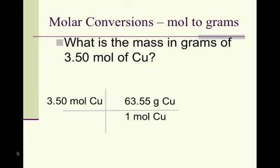The molar mass of copper is 63.55 grams per mole. Since we have moles in the top box, it has to go in the bottom of the next box, so it'll cancel. And we're left with grams of copper. If you multiply the top boxes and divide the bottom boxes using the proper number of significant figures, you should get 222 grams of copper.